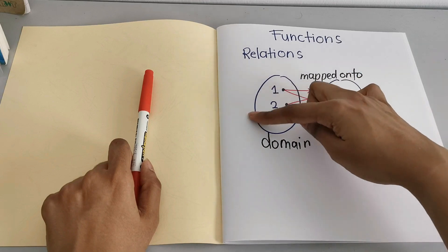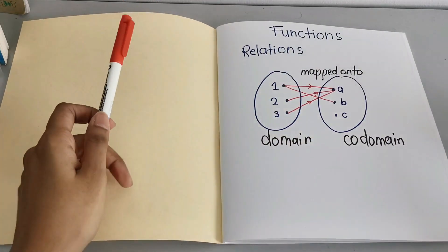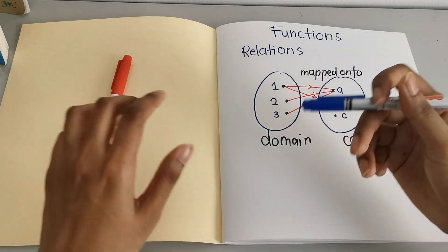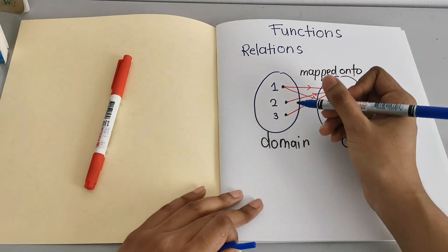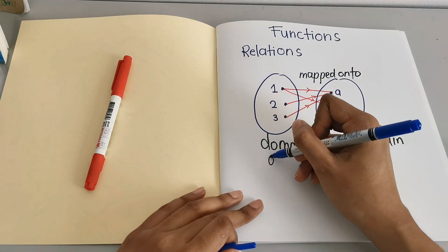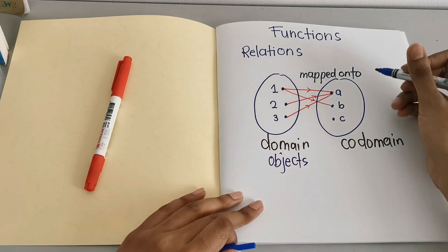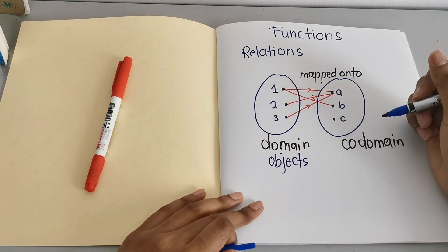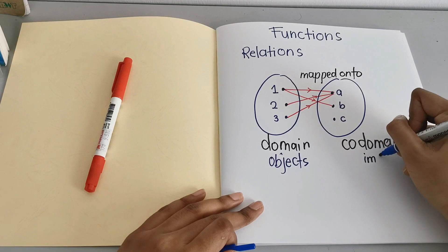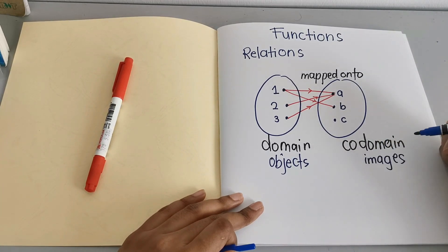Now we have all the elements in the domain, and all the elements in the domain are called objects. All the elements in the codomain are called images.